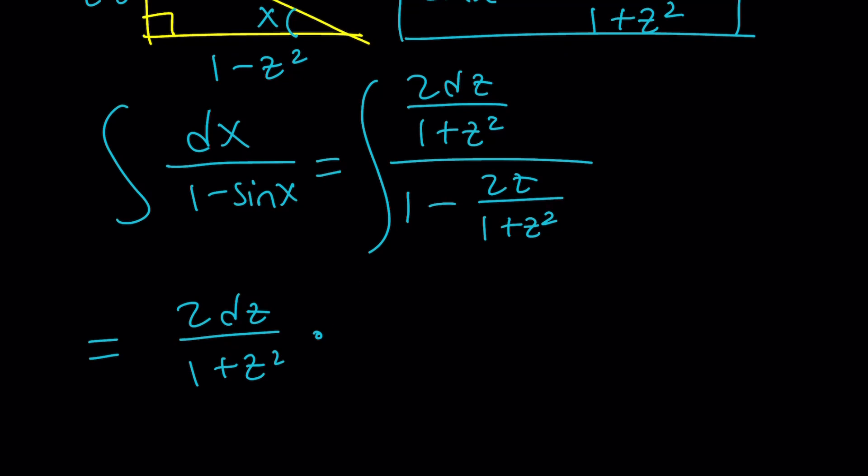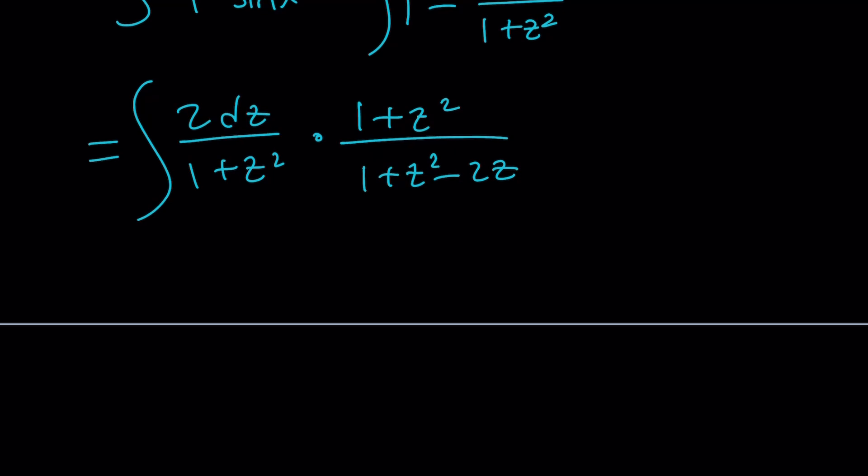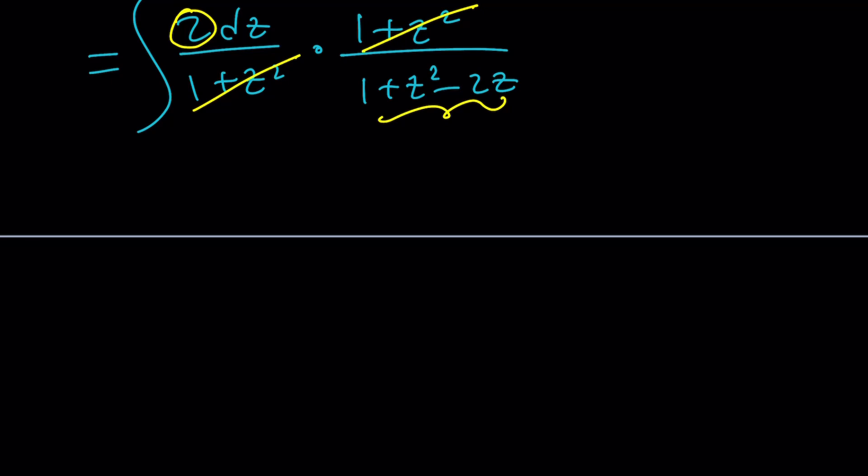That's going to give us 2dz over 1 plus z squared. And then this one is just going to be 1 plus z squared minus 2z over that. But we're going to flip and multiply. So the 1 plus z squared is going to mean the numerator. And 1 plus z squared minus 2z will be in the denominator. And we're supposed to integrate this, right? Now notice what this becomes. We can go ahead and cancel these out. And then we can definitely take the 2 out.